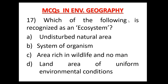Question number 17: Which of the following is recognized as an ecosystem? निम्न में से कौन ecosystem के रूप में पहचाना जाता है? Option A: Undisturbed natural area, Option B: System of organisms, Option C: Area rich in wildlife and no man, Option D: Land area of uniform environmental conditions. System of organisms is recognized as an ecosystem. Therefore, Option B is the correct answer.